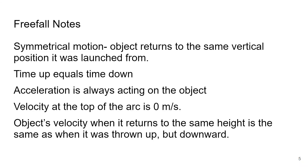Symmetrical motion occurs when an object goes upward and then returns to the same vertical position where it was launched from. When this happens, the time up will equal the time down, and acceleration is always acting on the object no matter where it is. When the object gets to the top of the arc, it's going to have zero meters per second velocity because it stops going up, and then acceleration brings it back down. For symmetrical motion, an object's velocity when it returns to the same height is the same magnitude as when it was thrown up, but now pointed downward.